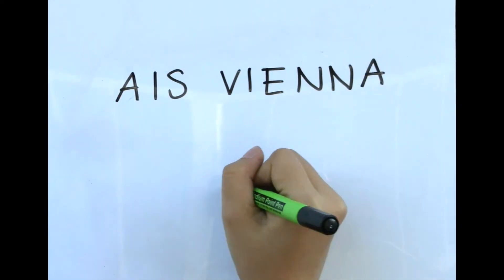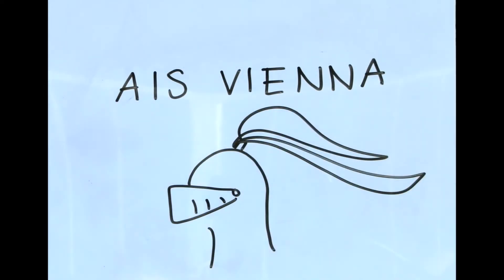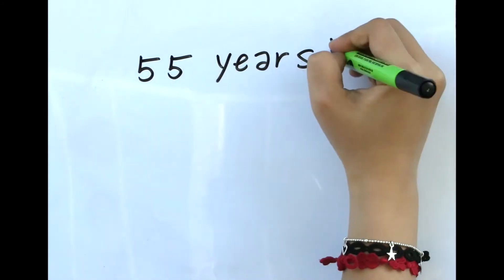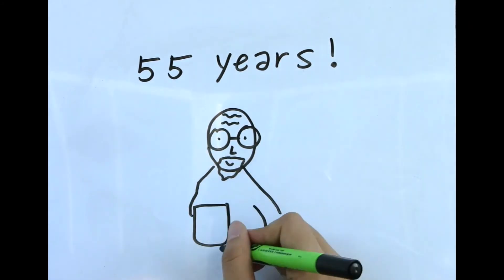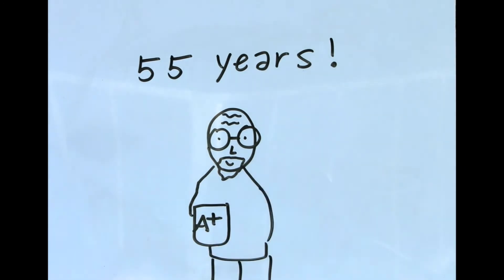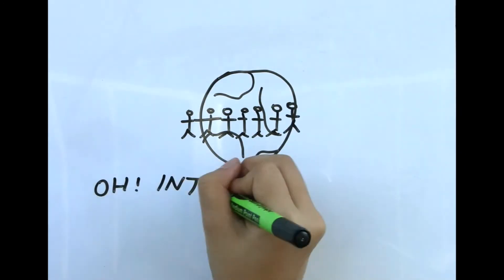Our school, the American International School of Vienna, is where the conference will be taking place. Our school has been operating for almost 55 years and prides itself on being a nurturing place for learning within the rich cultural context of Austria, with students from all over the world.